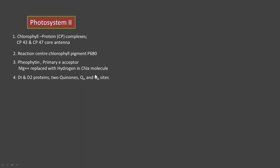D1 and D2 proteins have two important sites, QA and QB — these are the two quinone nodes that receive electrons sequentially. There is also an important complex on the luminal side: the oxygen evolving complex (OEC), due to which photolysis of water takes place and oxygen is released. The OEC is present on the D1 protein.